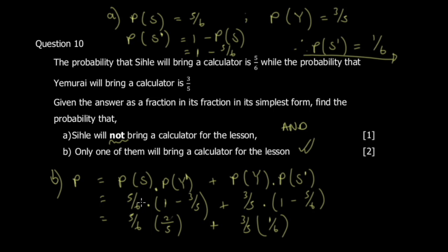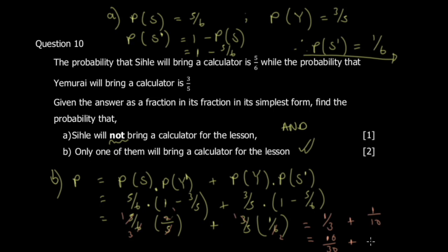Simplifying: (5/6) × (2/5) = 10/30 = 1/3, and (3/5) × (1/6) = 3/30 = 1/10. Adding: 1/3 + 1/10. Converting to a common denominator of 30: 10/30 + 3/30 = 13/30.